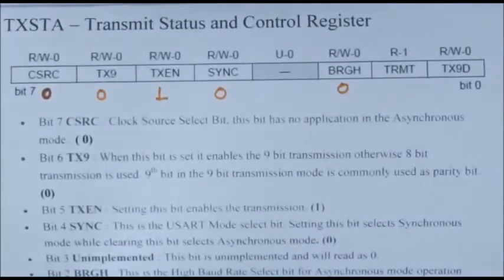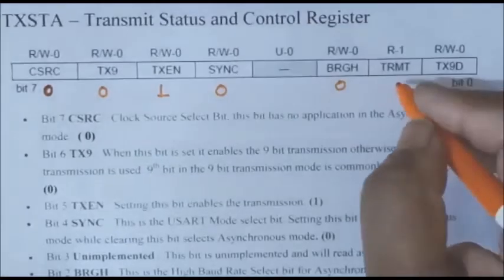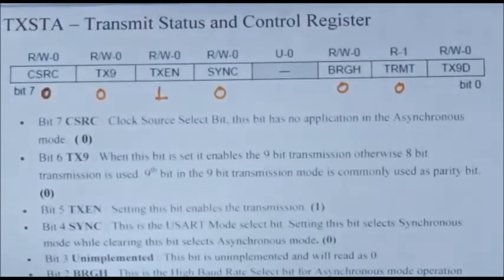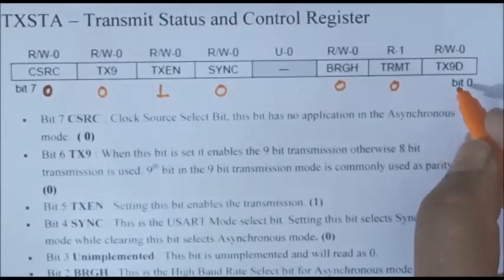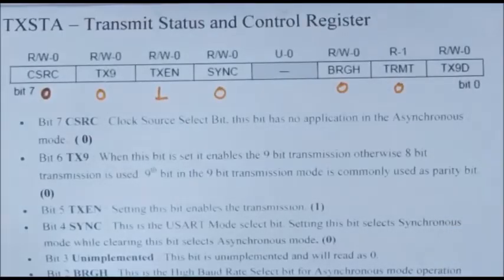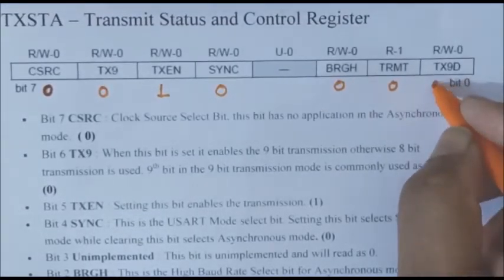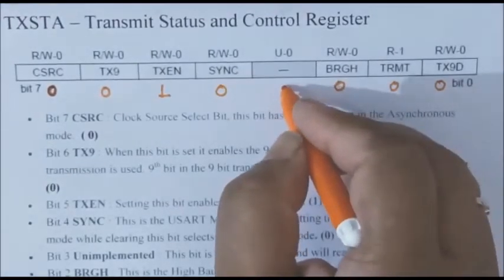The next bit is TRMT, used for the Transmit Shift Register (TSR). When the TSR register is empty, this bit is set to 1, and when TSR is full, this bit is set to 0. This bit is set or reset by the microcontroller. The last bit, TX9D at bit position 0, is the 9th bit of data transmission. If it is 0, the 9th bit is transmitted as 0; if it is 1, the 9th bit is transmitted as 1. We are not going to use 9th bit data transmission, so this bit will be 0, and the unused bit is initialized as 0. Therefore, we will initialize the TXSTA register with the data 0b00100000.